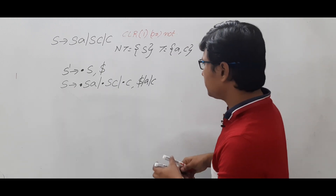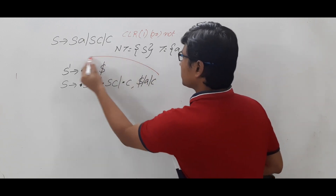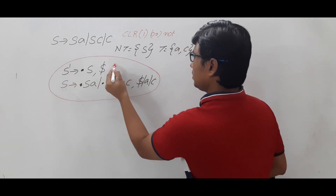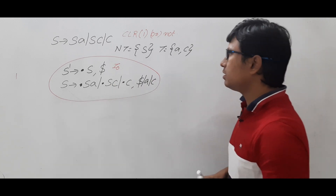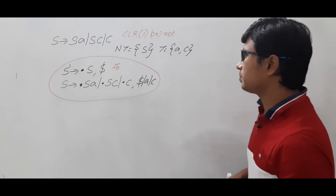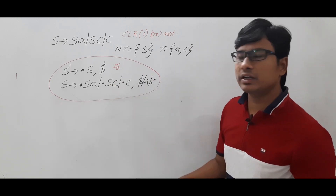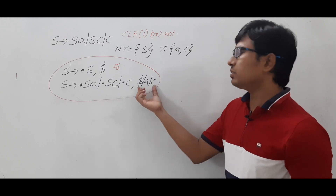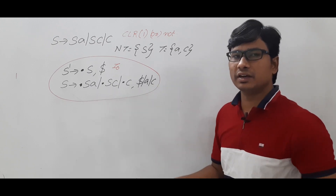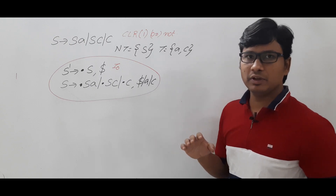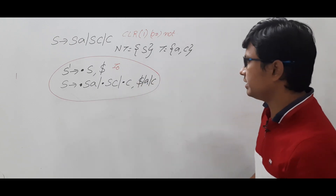Now let me make this as I0. You can ask me: sir, why have you not done it again? Because all the terminals I got in the lookahead — so I don't need to go for the redundant step. Again I will get the same lookahead. That's why I have stopped here.